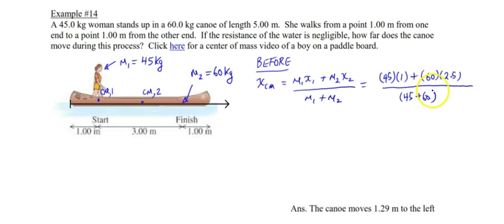That means our center of mass of our person-canoe system is 1.86 meters from the left side of the canoe. So this location is our center of mass of the woman-boat system.